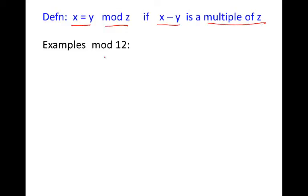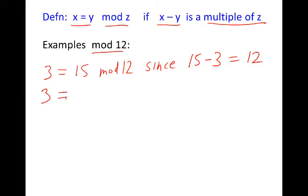For example, if we're working mod 12, we know that 3 p.m. is the same thing as 15 o'clock mod 12, since their difference 15 minus 3 equals 12, a multiple of 12. I can also start with 3, add a multiple of 12 like 24, so 3 plus 24 is 27. Thus 3 is equivalent to 27 mod 12 since 27 minus 3 equals 24, a multiple of 12.